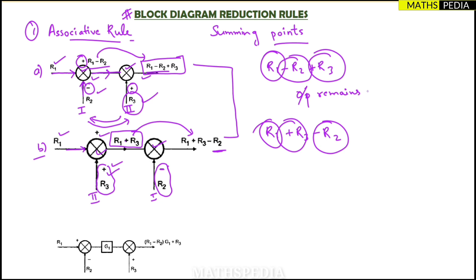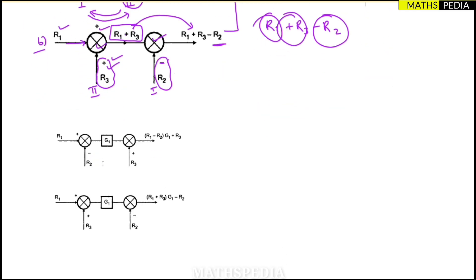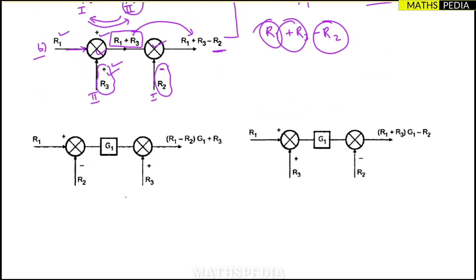The associative law states that changing the position of summing points does not impact the output. However, there is a problem to consider. Look at the next cases, C and D. Here, two summing points are present, but a gain block G1 has been introduced between them. We need to determine whether the associative law still holds in this situation.